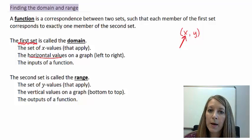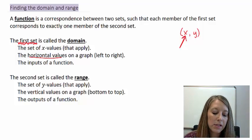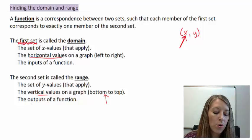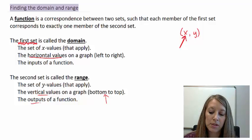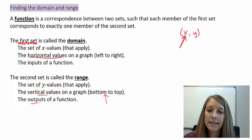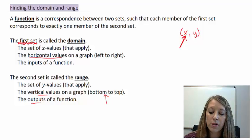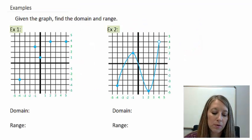The range is respectively going to do the same thing on the other side. It's going to be the Y values, or the vertical values, which we list from the bottom of the graph to the top of the graph — or the outputs of our functions. So we want to identify what our domain and range is given certain criteria. Let's jump right into one of those examples.